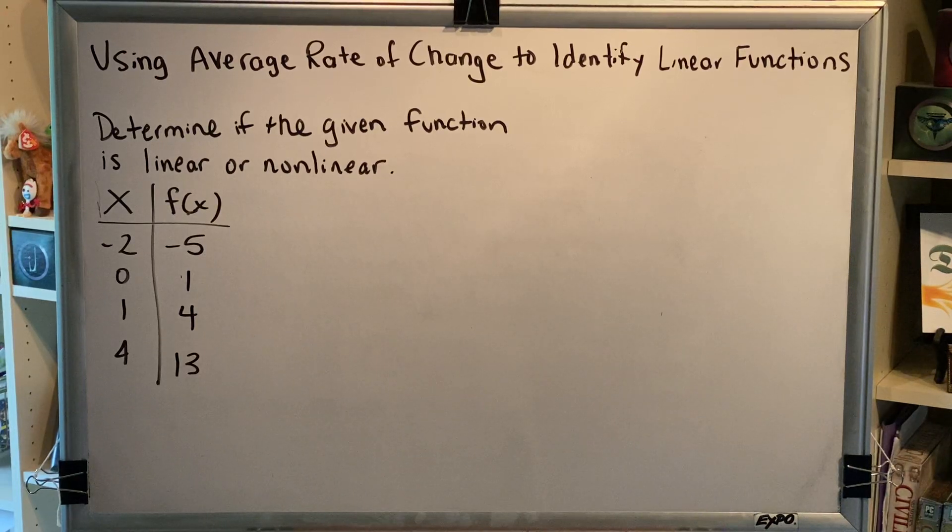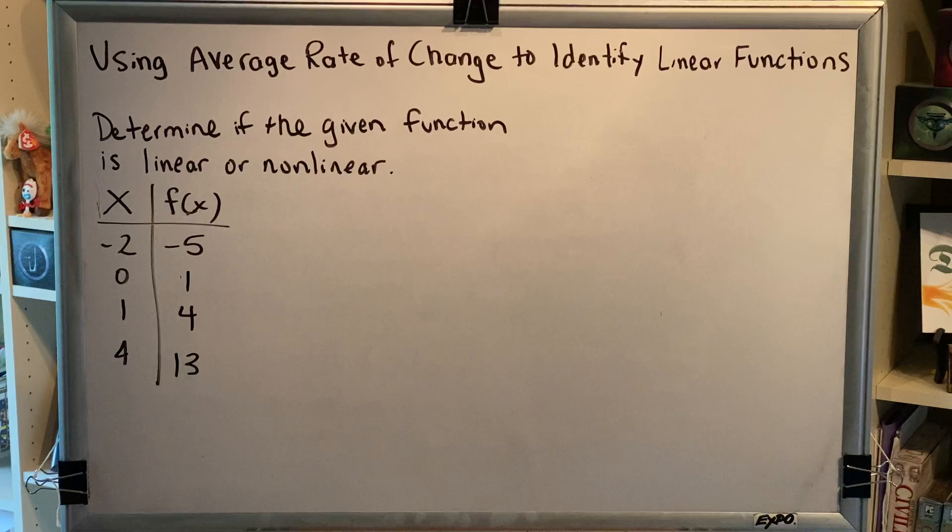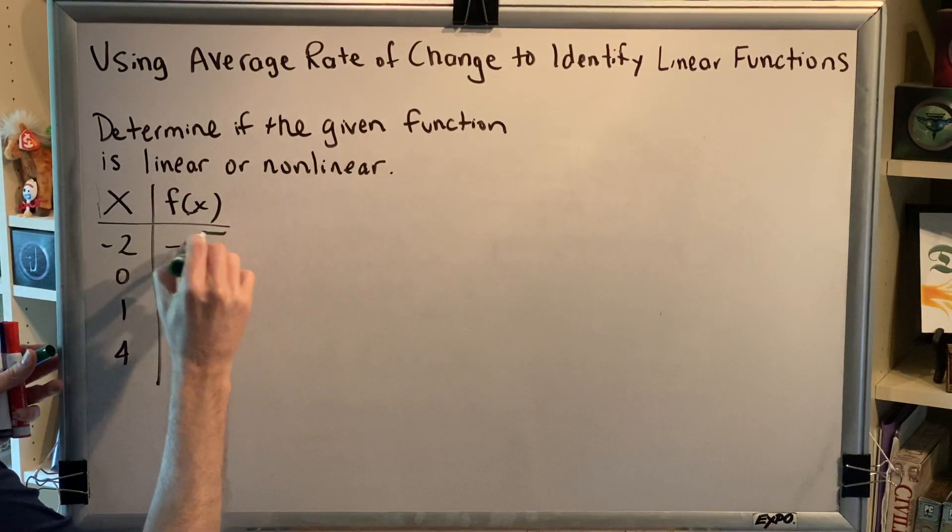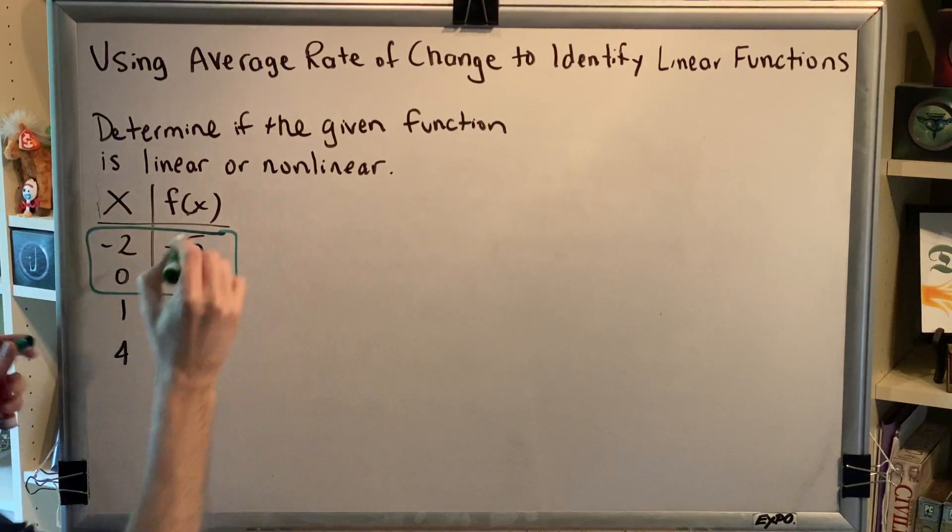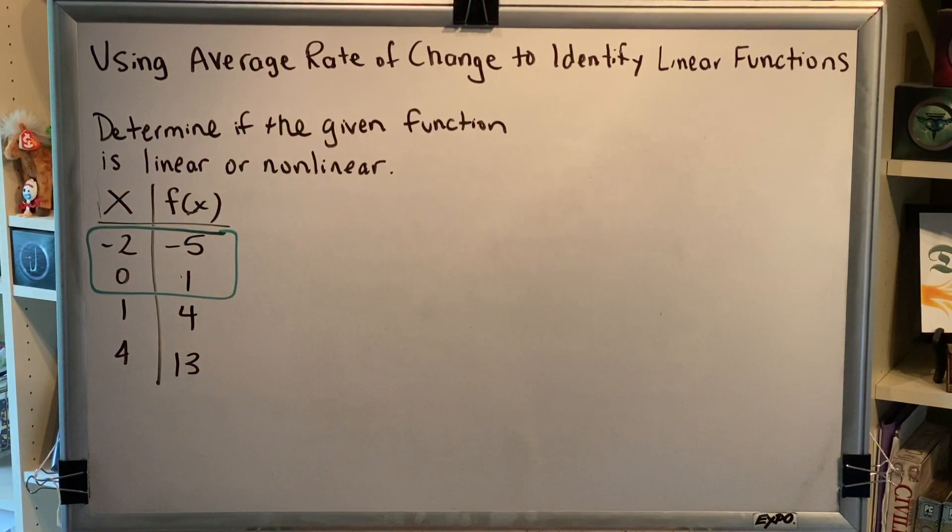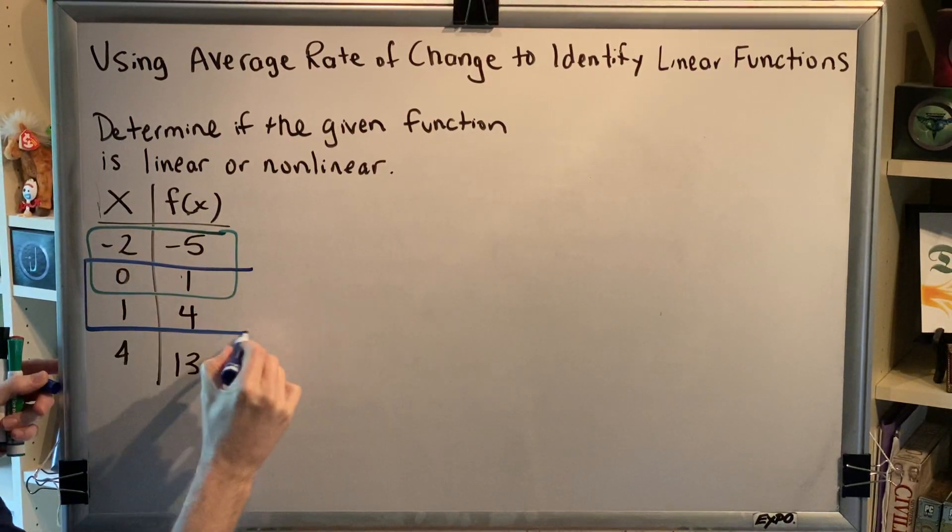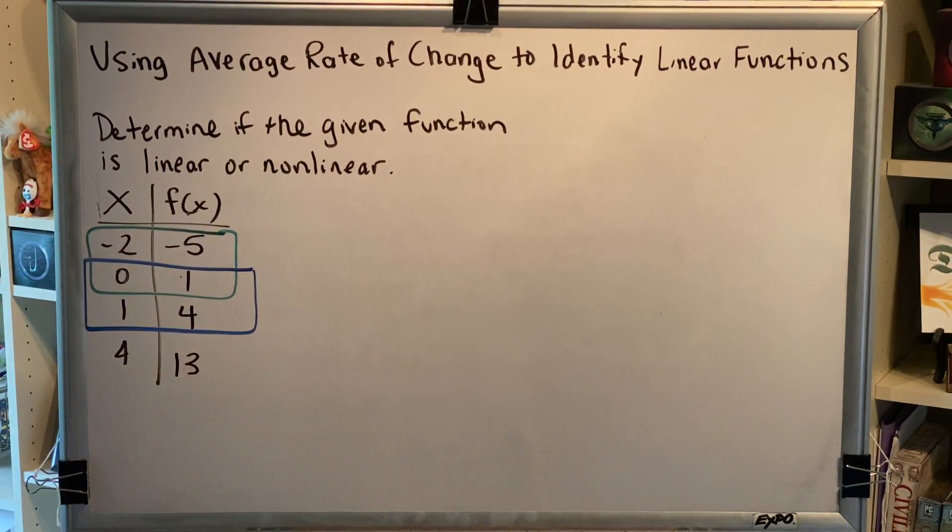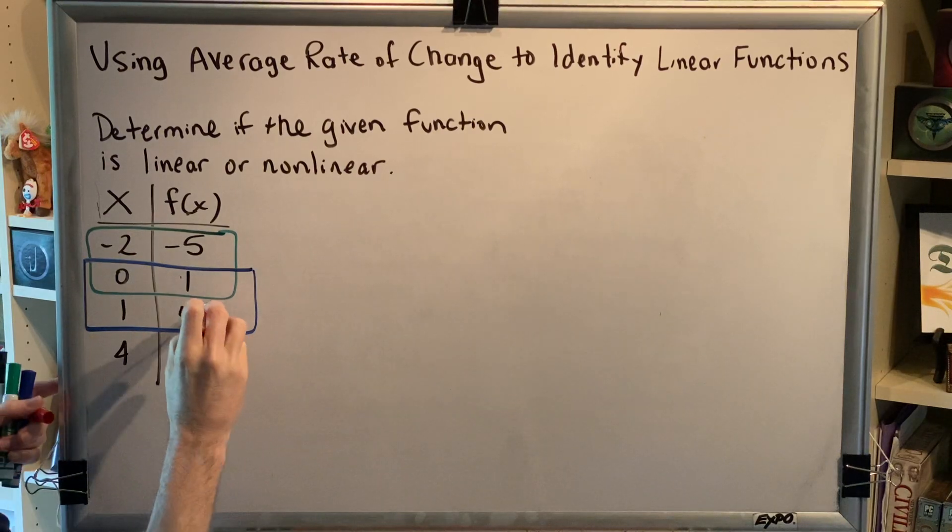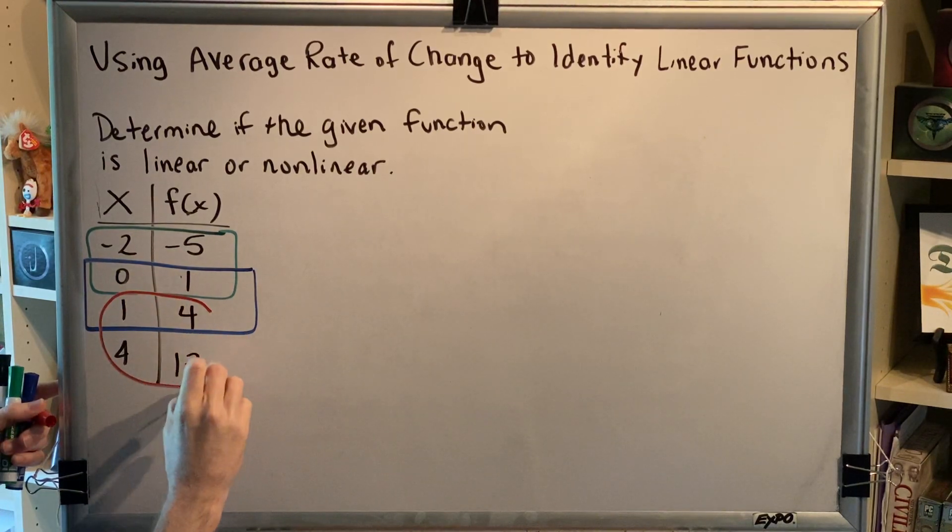Let's look at a problem. Determine if the given function is linear or nonlinear. Okay, we need to identify the slope between each pair of adjacent points. So for example, the first pair of points we'll compare will be these, and then the second pair of points we will compare will be these, and then the third pair of points we'll compare will be these.